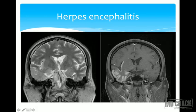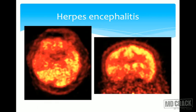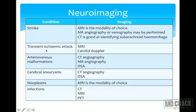In herpes encephalitis, a gradient echo image rules out hemorrhage within the involved area. On T2-weighted imaging, the lesion is barely visible, but post-contrast imaging increases confidence in identifying the involved area. After MRI, a lumbar puncture is performed. The same patient underwent a radionuclide scan, which showed hypometabolism in the area involved by herpes encephalitis.